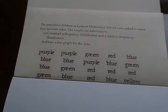To answer part A, construct frequency distribution and relative frequency distribution, we have to make a table in a way that in one column it represents the name of the color and then next how many times it appears in this data.